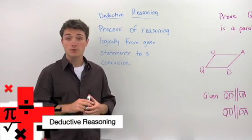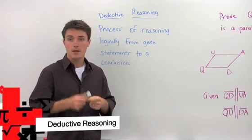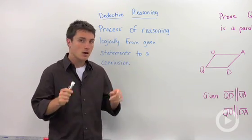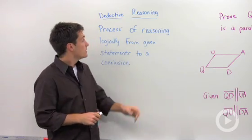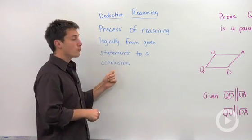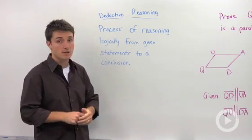There are two types of reasoning that we use in geometry: inductive reasoning and deductive reasoning. We often compare the two. Deductive reasoning is the process of reasoning logically from given statements to a conclusion.